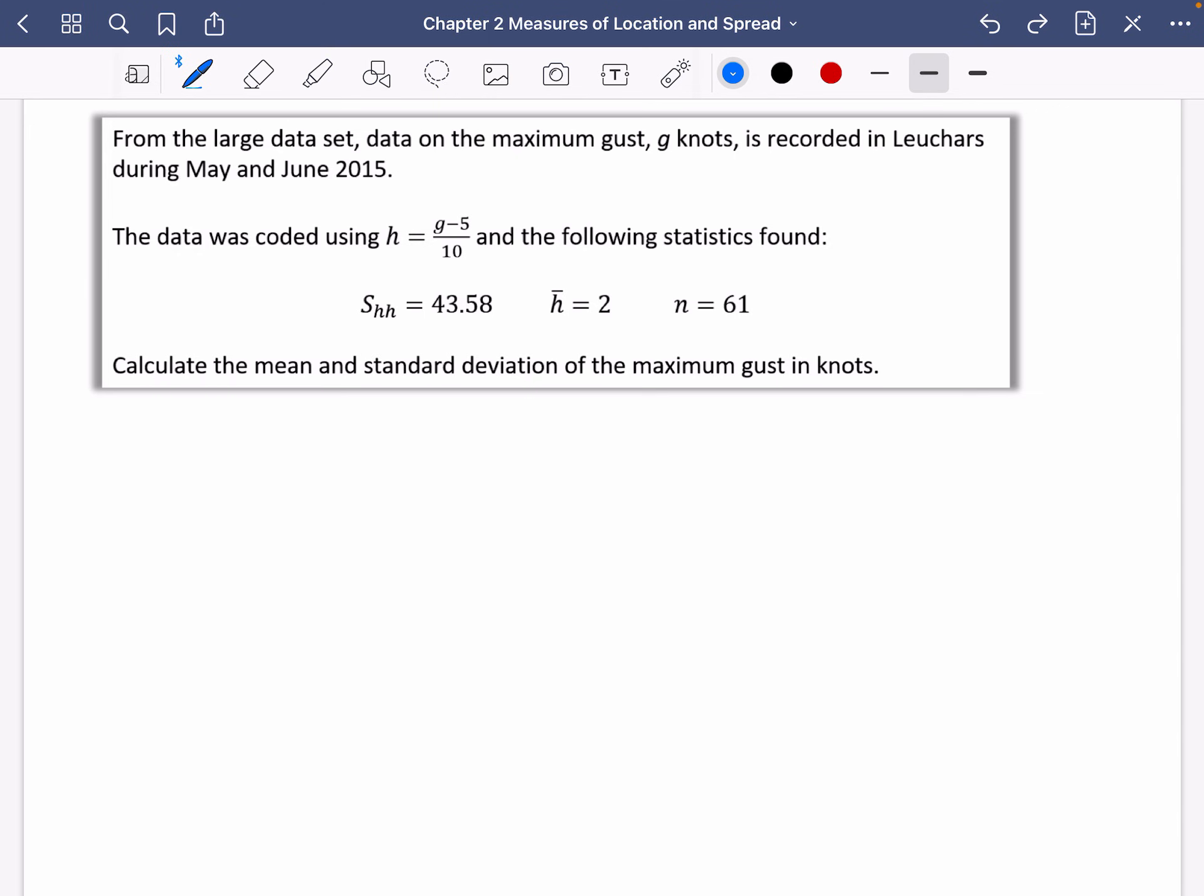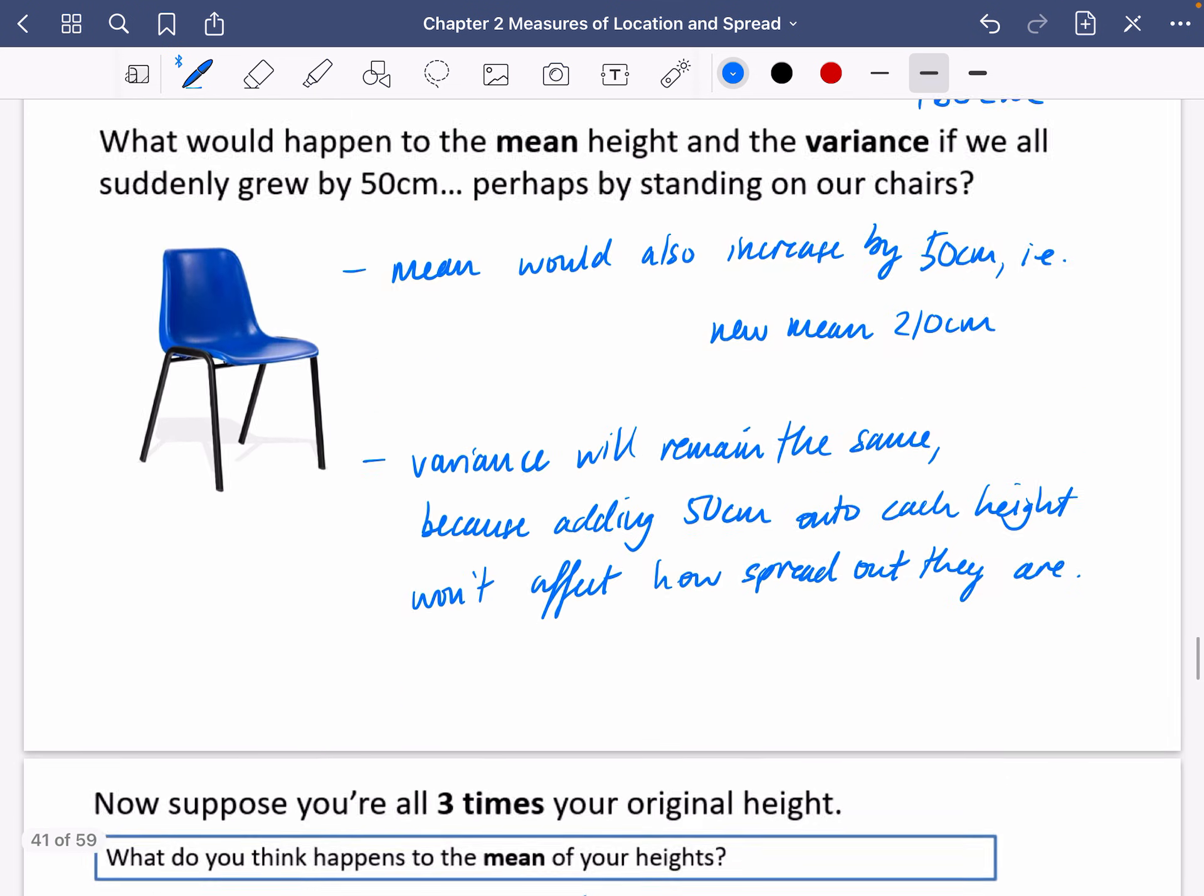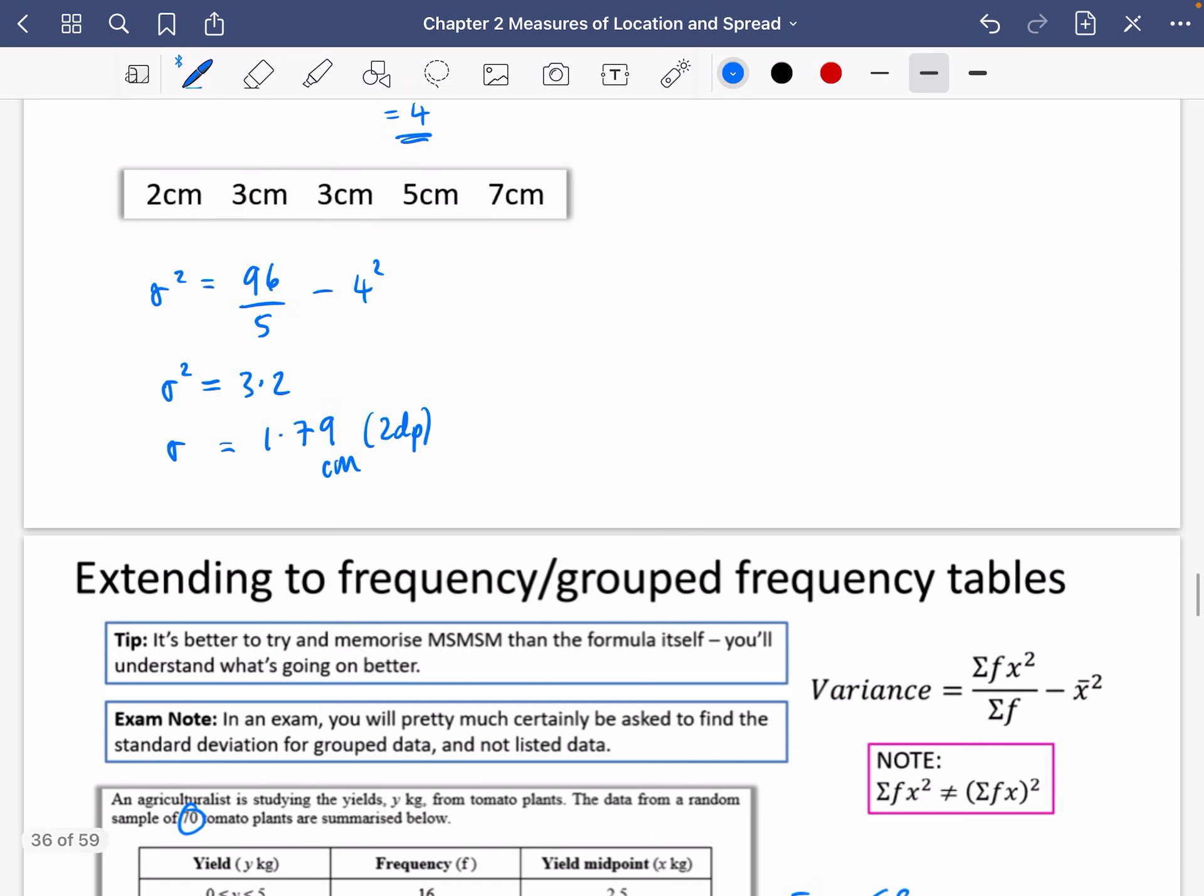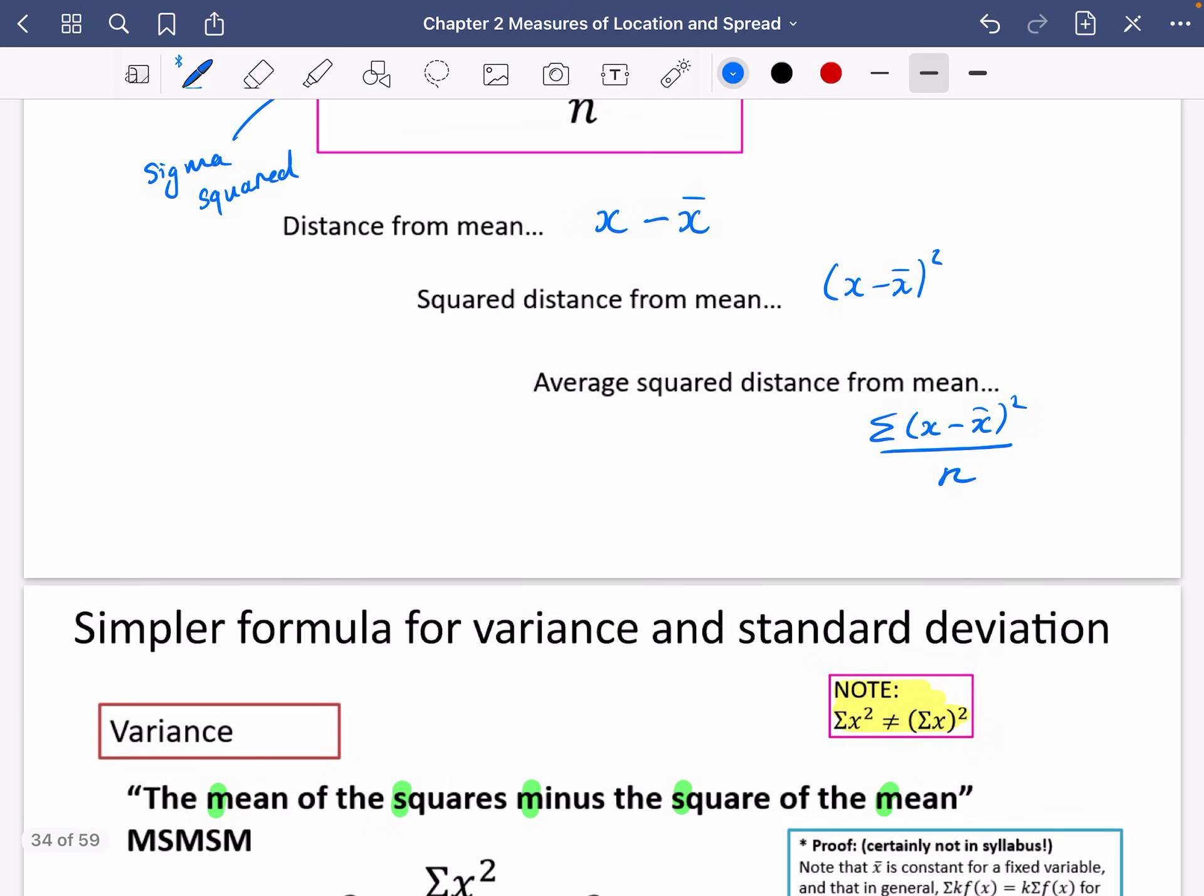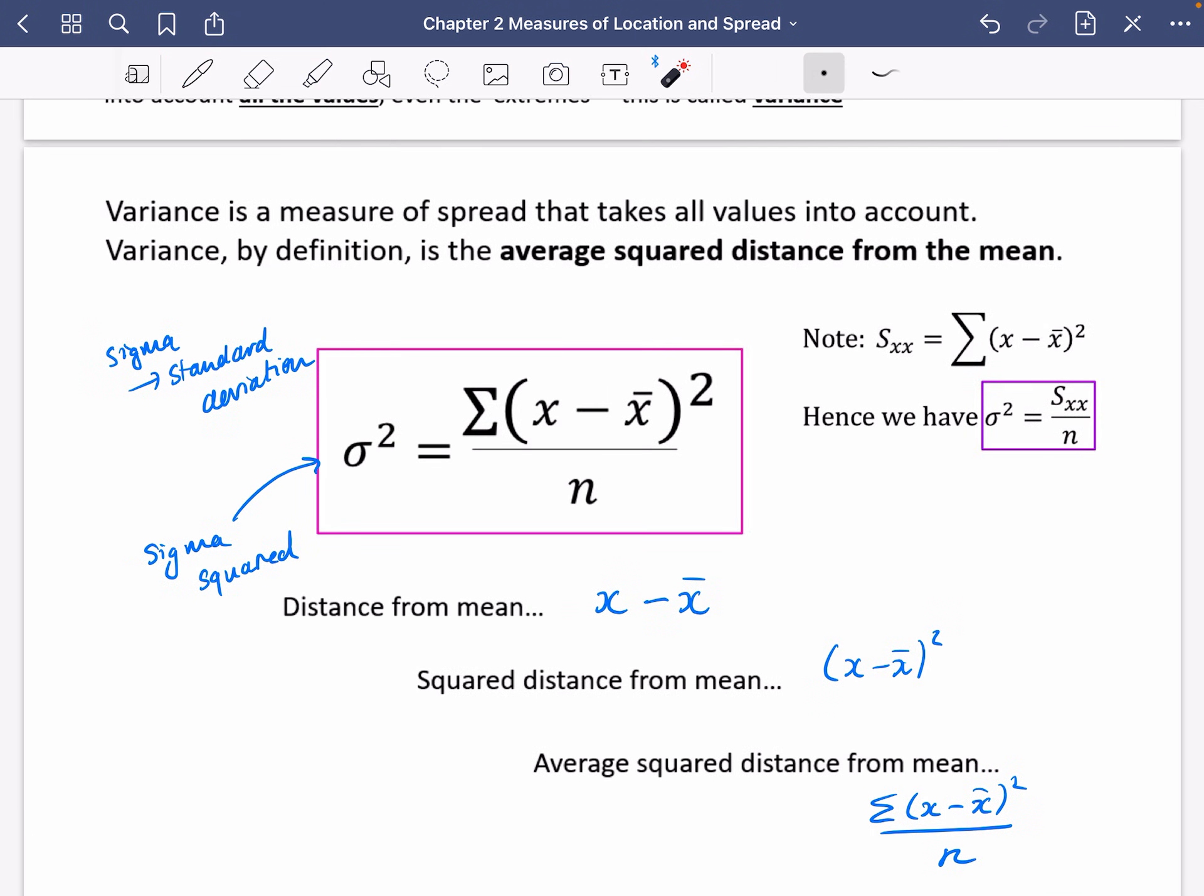The data was coded using H equals G minus 5 over 10 and the following statistics found. Calculate the mean and the standard deviation of the maximum gust in knots. So the first thing that we're going to try and do is we're going to try and find out the mean of H. And we're going to find out the standard deviation of H. And then we're going to do the ones for G for the second part. So the mean of H, they've already told us, is G. The standard deviation, they've given us this weird thing. Now, hopefully you remember from a few pages up when you're looking at the variance. The variance has got this alternative form. And I believe that it's actually in the formula book.